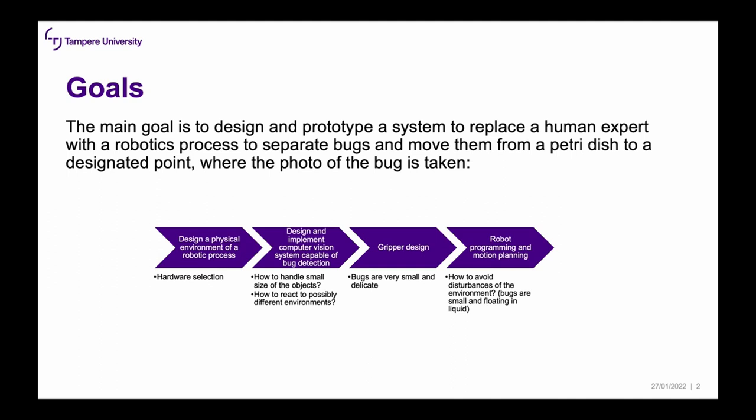The second task would be to design and deploy a computer vision system capable of bug detection. We would need to decide how to handle the small size of objects and how to react to possibly different environments, such as different placement of the petri dish or different placement of the robot.